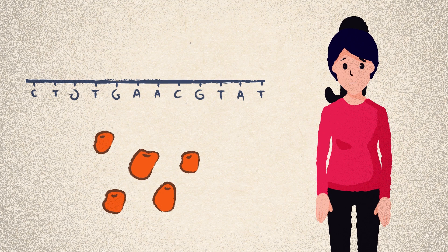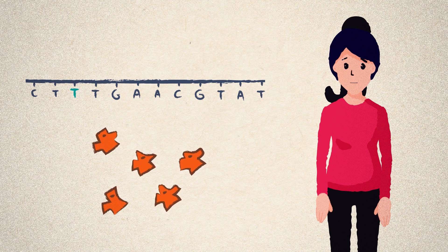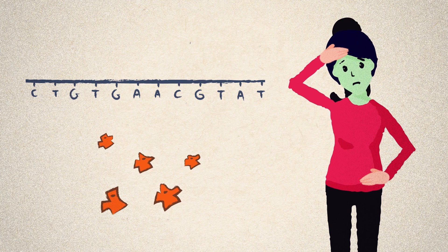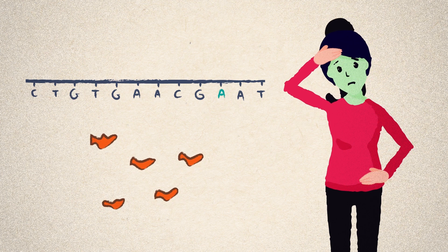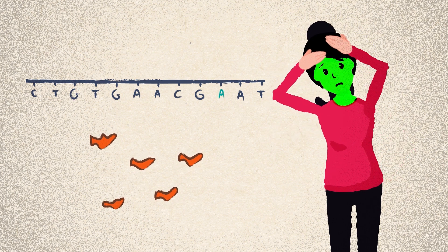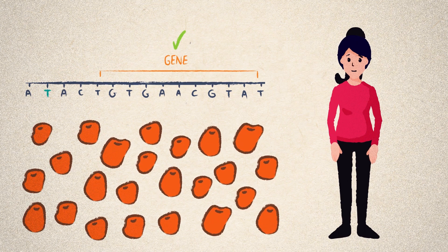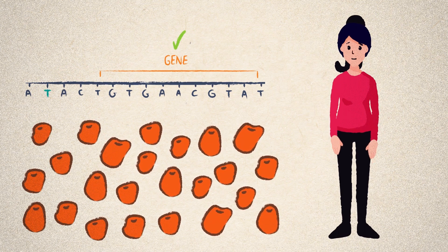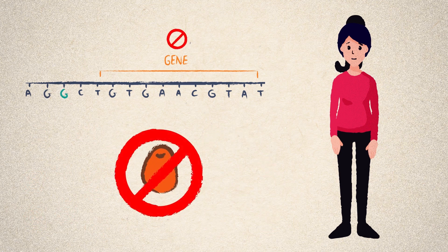Variants in genes can change the gene product that is made. This can cause it not to work as well as it should or not at all. Variants outside genes can change how and when genes are used.